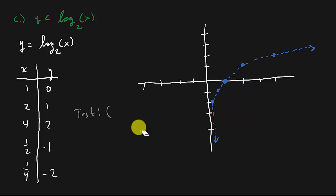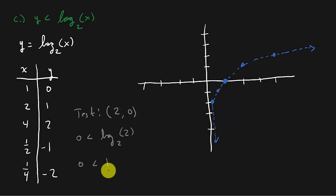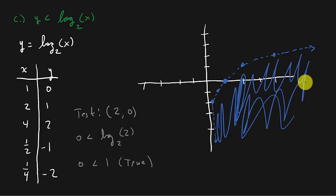Let's pick some other point — how about (2, 0)? Go over 2, y is just 0. Plugging in: 0 is less than log base 2 of 2, so 0 is less than 1. That is a true statement. I picked that point, got a true statement, so this side gets shaded in — everything to the right and below the curve.